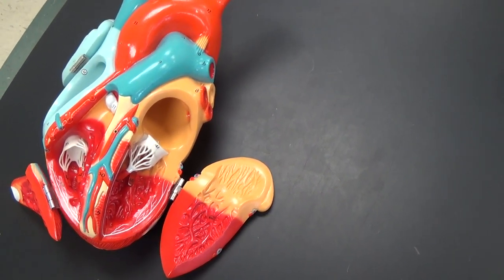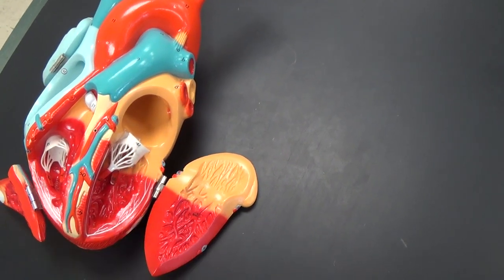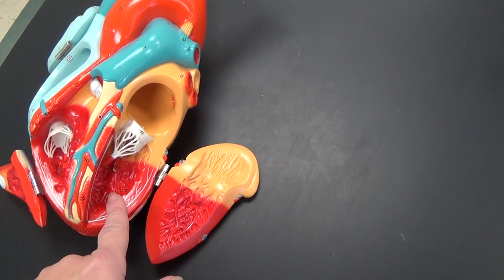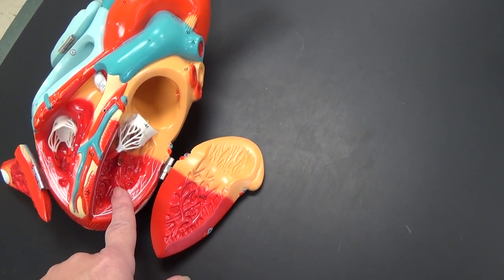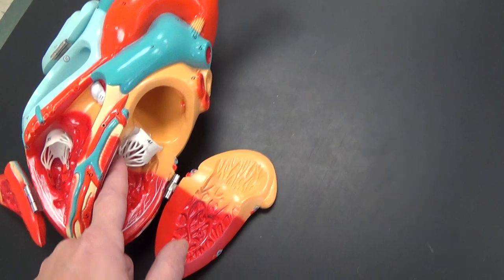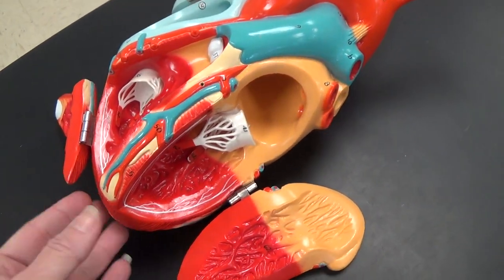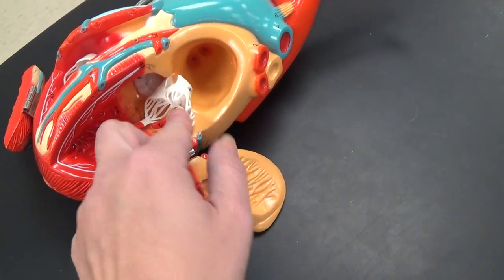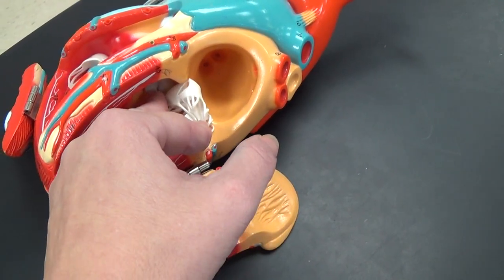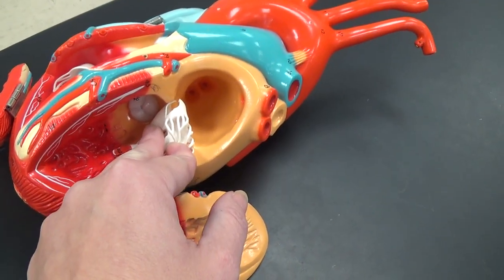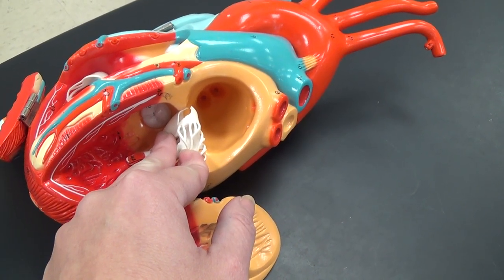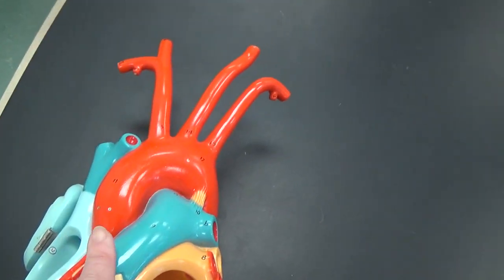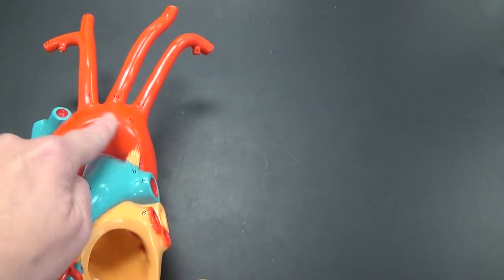However, there are other names as well. This can be called the bicuspid or the mitral valve. Blood will be pushed through this valve into the left ventricle. From the left ventricle, blood would be pushed from the apex of the heart, the bottom, up past here. You can begin to see some white structures way in the back there. That is a semilunar valve. Blood will be pushed up through it and it will move into this major blood vessel here, which is the aorta.